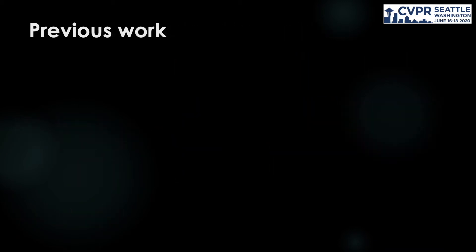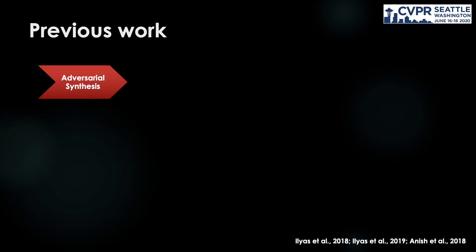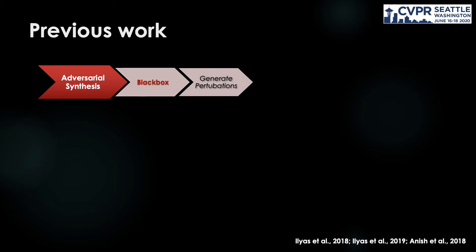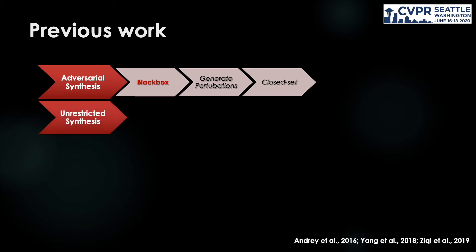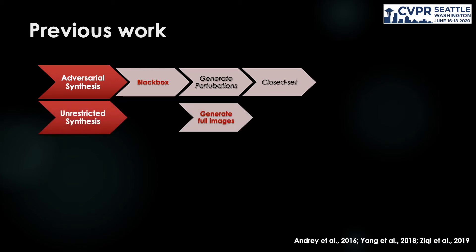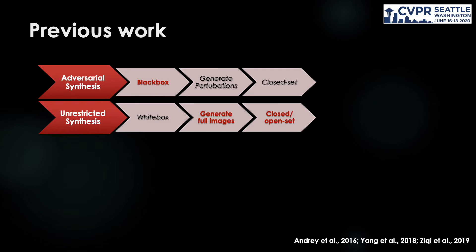There are some previous approaches that have partially addressed this task. For example, the adversarial approach analyzes the gradients obtained from the black-box classifier's outputs for the synthesis. However, they can only generate perturbations and support closed-set synthesis. Another direction is the unrestricted synthesis approach, where full images can be generated given their high-level representations. Although they can provide support for open-set synthesis, these methods require the classifier structure to be accessible.